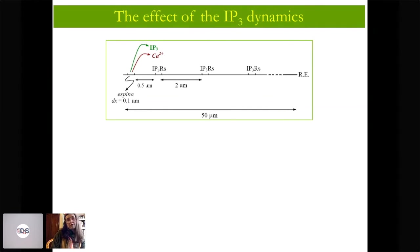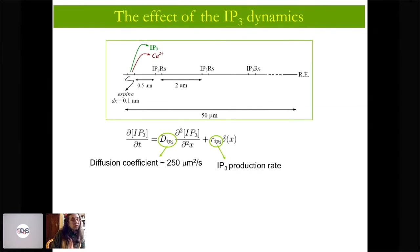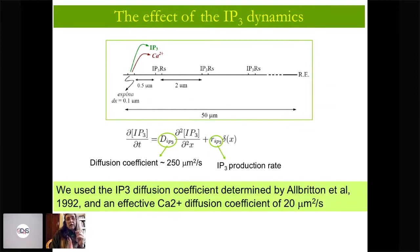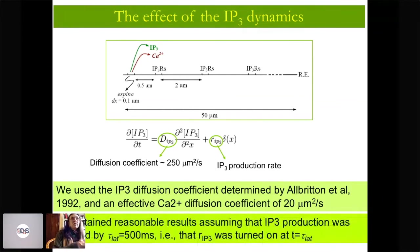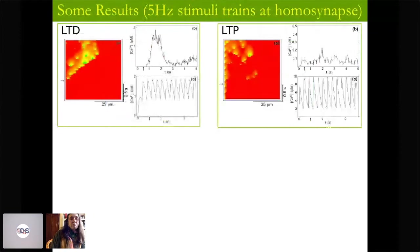Starting with uniform IP3, we could not reproduce the observation that LTP was restricted to the homosynapse. So we thought about including the dynamics of IP3 because calcium plays this dual role. If calcium arrives at the clusters before IP3 does, the clusters might go into an inhibited state and the wave will not propagate. This is more likely to happen in the case of LTP because of the higher calcium concentration.